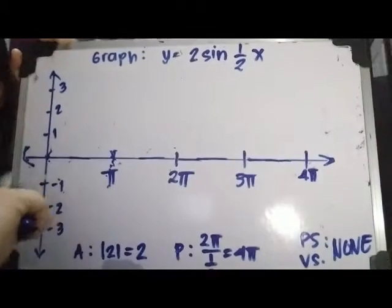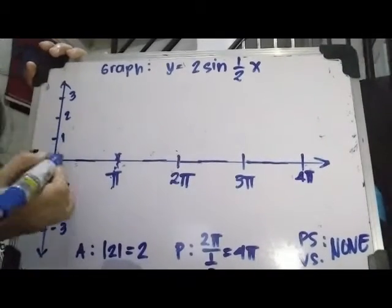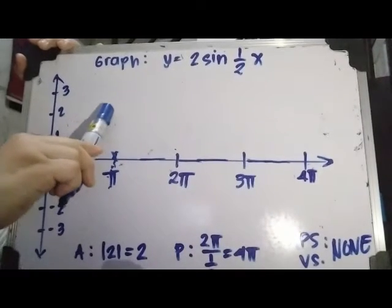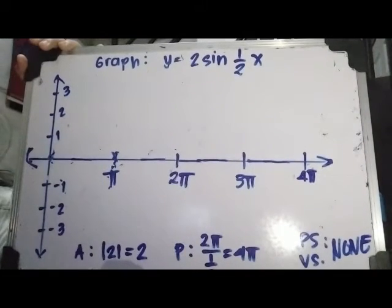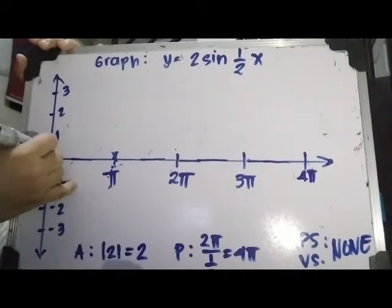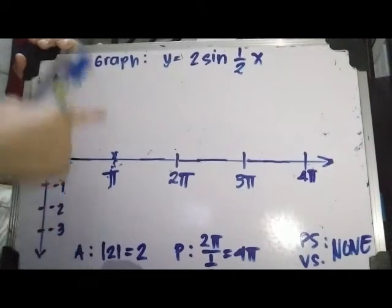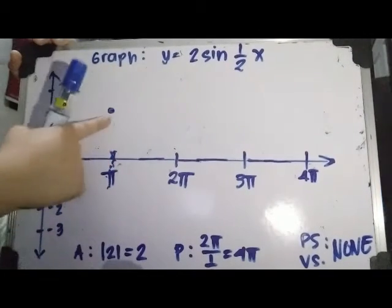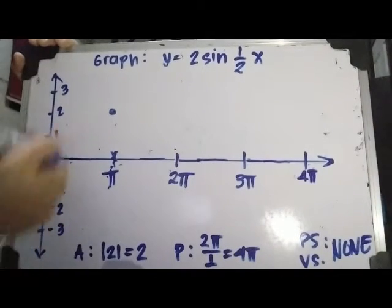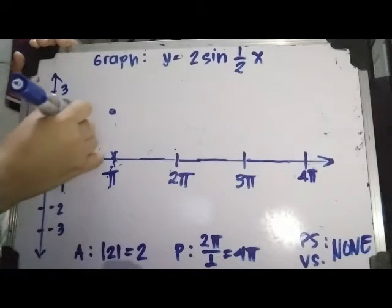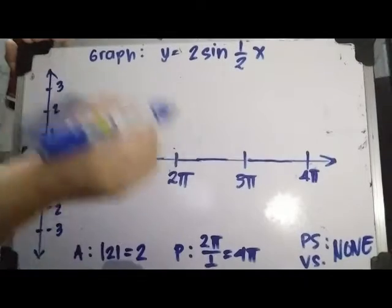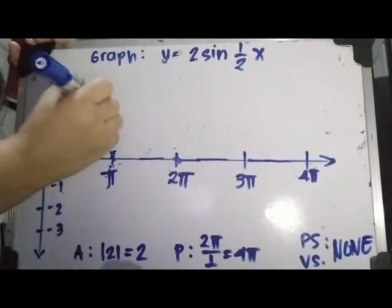We'll again start from the origin and then go up 2 units to the next partition. Because of our amplitude, we will go 2 units from the center line. This point should be parallel to π because it is our first partition. We'll go up there and then go back to the center line at our second partition.